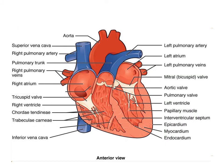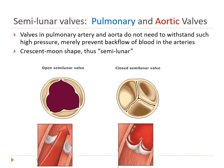The semilunar valves have three cusps like little cups attached to the side walls of the arteries. If blood tries to go backwards, they balloon out like a parachute and close. But if blood flows forward in the correct direction — out the aorta or pulmonary artery, away from the ventricle — they blow open easily. These valves are mostly preventing backward flow from gravity, not having to withstand the force of a ventricular contraction like the AV valves are. So they don't need to be as strong, which is why they have a different structure.